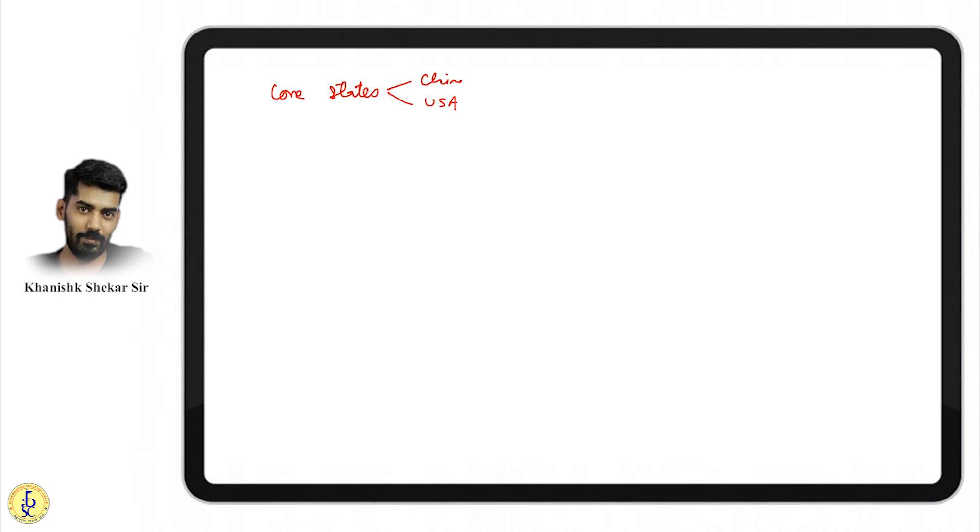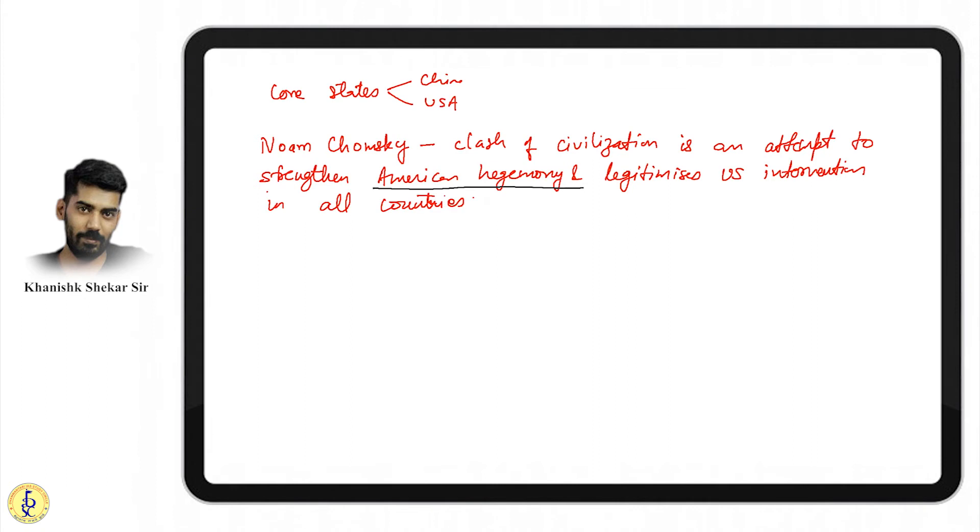The big challenge is China with its core state versus USA. Noam Chomsky has written brilliant books like Manufacturing Consent. He blames media totally for manufacturing consent. He believes Clash of Civilizations is a ploy to strengthen American hegemony, legitimizing US intervention everywhere by showing China as a threat. This is the debate on Clash of Civilizations.